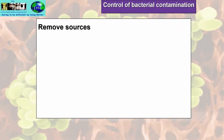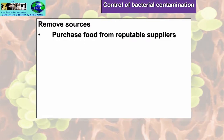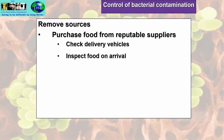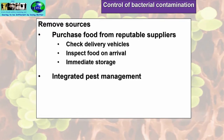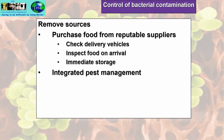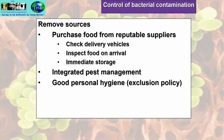To control bacterial contamination, we can remove sources: purchase food from reputable suppliers as part of the HACCP Food Safety Management System, check delivery vehicles, inspect food on arrival, ensure immediate storage, and implement integrated pest management. Good personal hygiene is essential, along with an exclusion policy for staff who have been sick, and a visitors policy ensuring visitors do not enter the kitchen unless attired in appropriate food handler clothing and aware of hygiene policies.